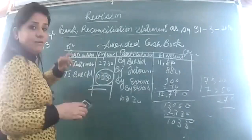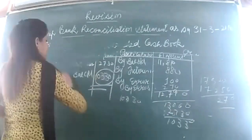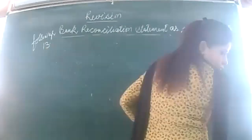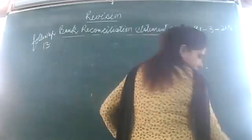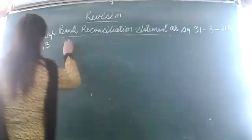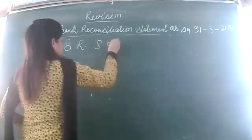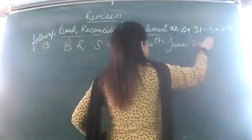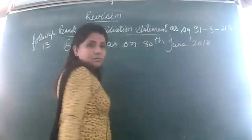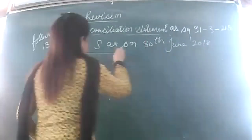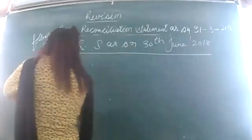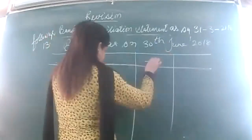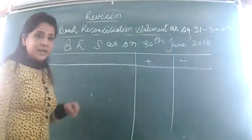BRS as on 30th June 2018. Format: particulars column, plus items, minus items. I write 'credit balance as per cash book' and enter it in the negative form, since it is a credit balance. Now, regarding the first item — I made the correction in the cash book for the amount error. The same check is one that was issued but not yet presented for payment, so it will appear in the BRS.